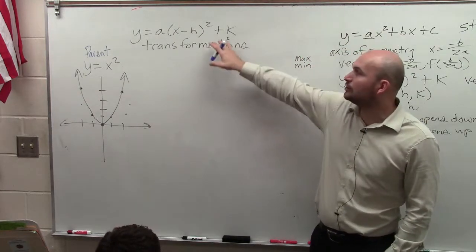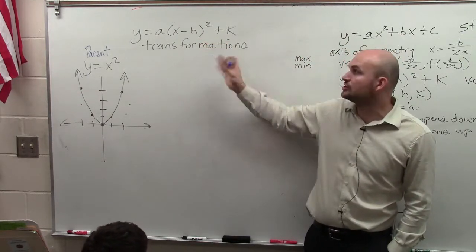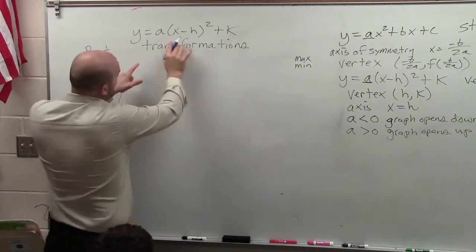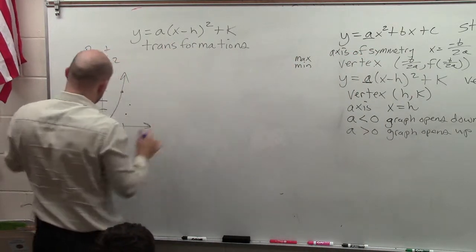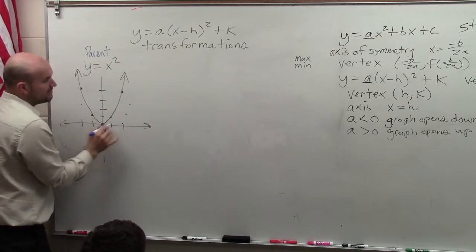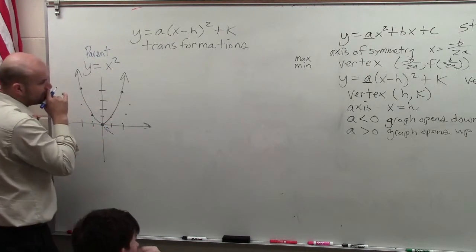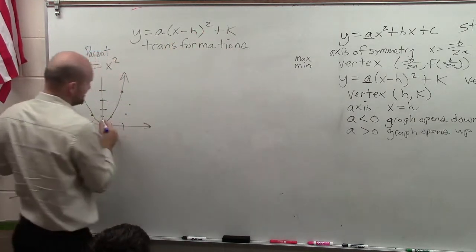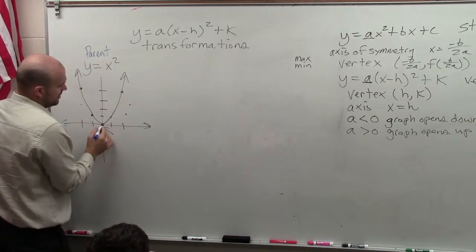But when we have an equation that's in vertex form, there's certain transformations that happen. Remember I said that h comma k is going to be your vertex, right? That's your vertex right here. So if I move my h and my k, it's going to give me a different point, let's say up 1.